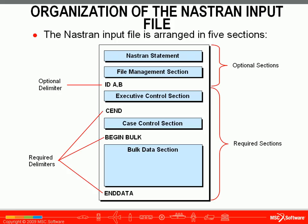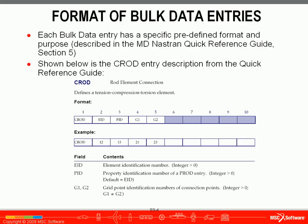Finally, the file ends with the END DATA delimiter. Each bulk data entry has a specific format, and these are described in the MDNASTRAN quick reference guide. Here we have the example of the CROD entry from the quick reference guide, and it tells us that the first five fields in the input file are used to define this element: the element ID, property ID, and then the two nodes connected by the element.